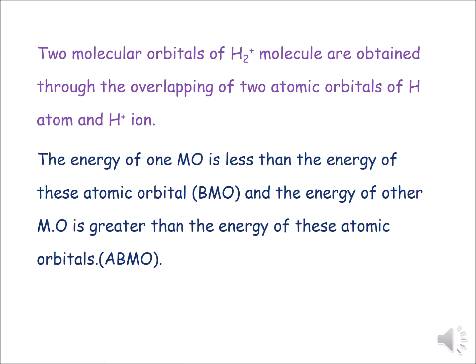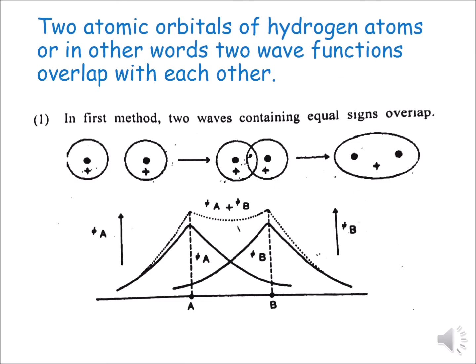Now we will see the formation of the H2+ ion in terms of quantum mechanics. According to quantum mechanics, all particles can also act as waves. We consider H+ and the H atom as waves and take their wave functions. For the bonding molecular orbital, the condition is that same-sign orbitals overlap, forming the bonding molecular orbital.